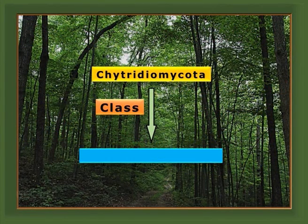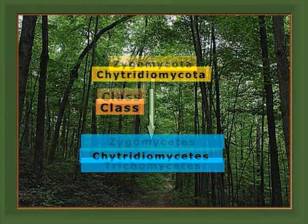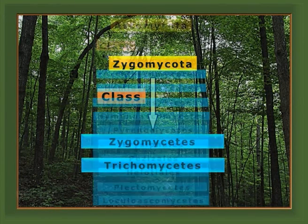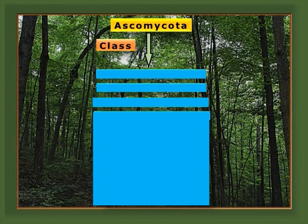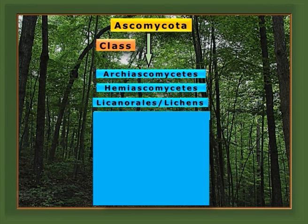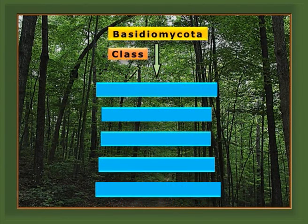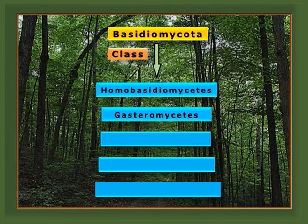Chytridiomycota can be further divided into Chytridiomycetes. Zygomycota can be divided into Zygomycetes and Trichomycetes. Ascomycota comprises many classes including Archaeoascomycetes, Hemiascomycetes, lichens, and many more. In the group Basidiomycota, the classes include Homobasidiomycetes, Gasteromycetes, and Urediniomycetes, among others.